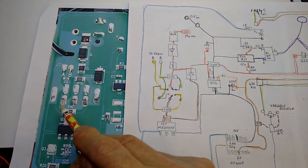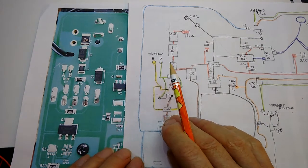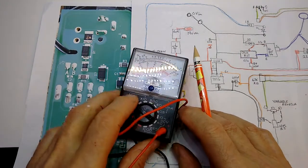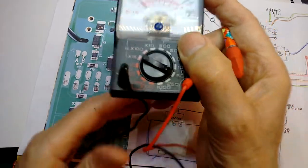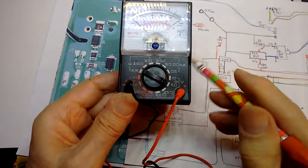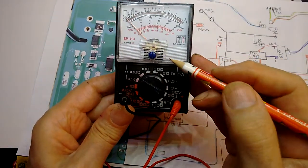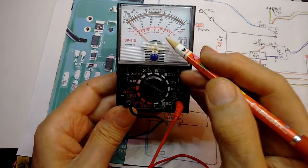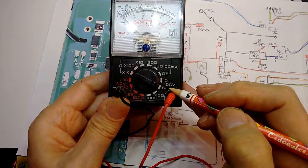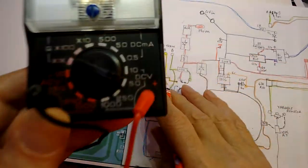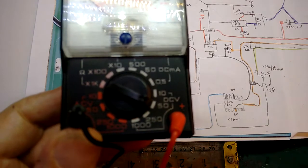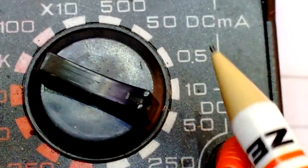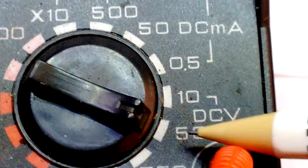So I suggested using a multimeter - any old multimeter should do, it shouldn't need to be anything special. Here I've got a little analog meter which I've got set to 50 volts DC. This only does 10 and 50 volts DC, so I've put it on the 50 volts DC range.